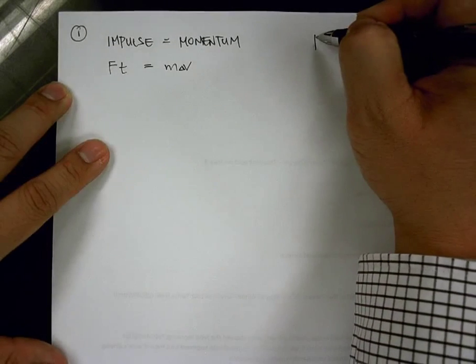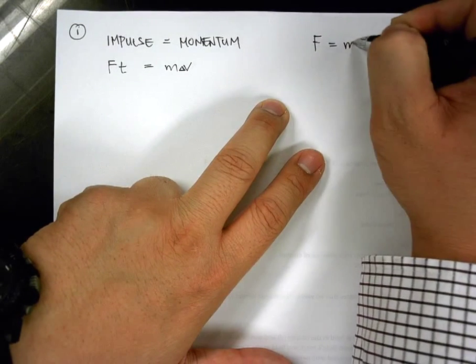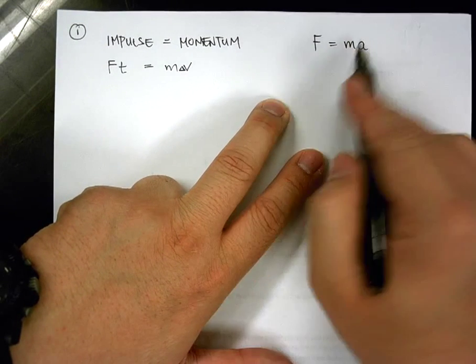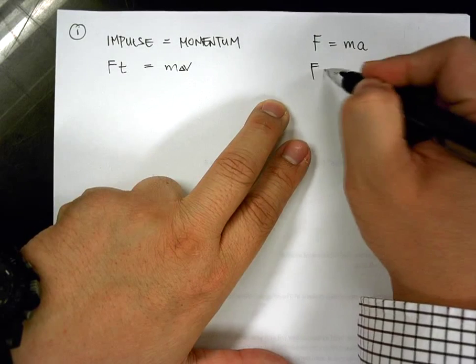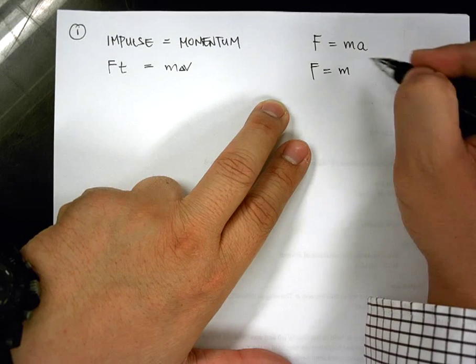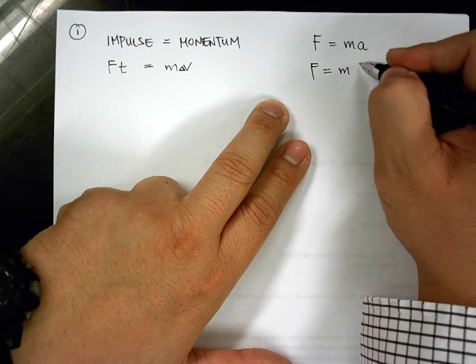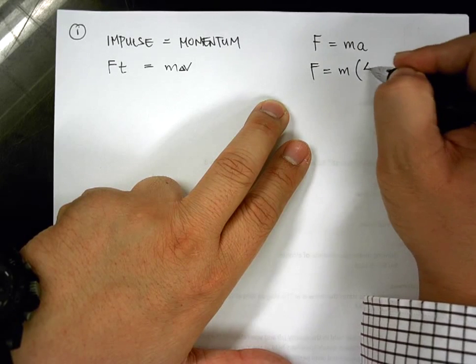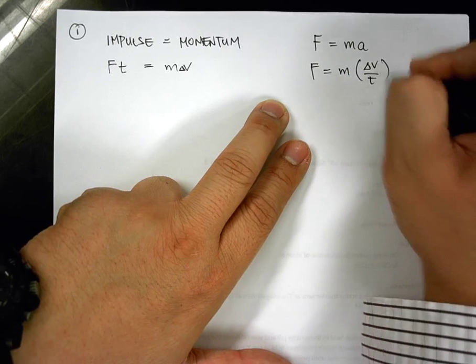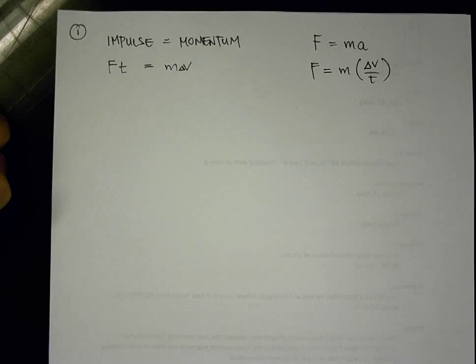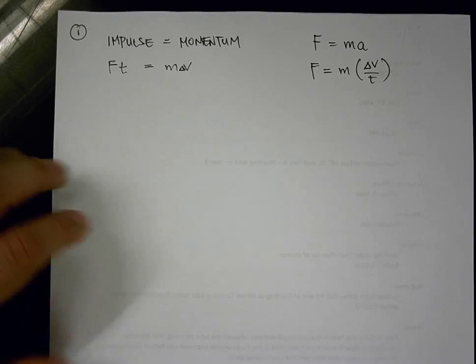Because remember, impulse momentum theorem comes from F is equal to mass times acceleration. Acceleration is basically the change in velocity over t. It's final velocity minus the initial velocity, right? Divided by time is equal to acceleration. Do you remember that equation from the blue sheet?